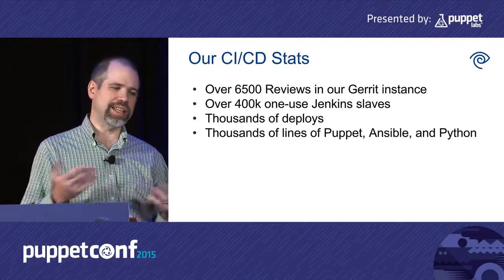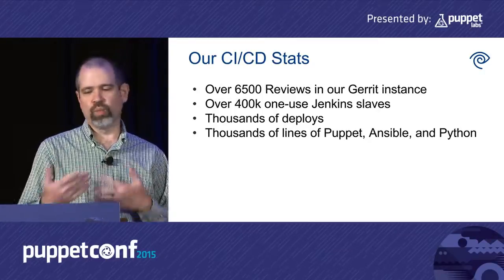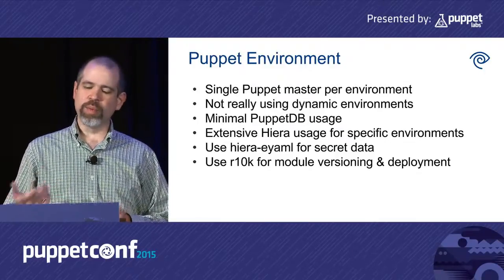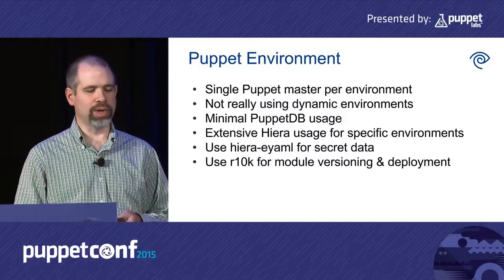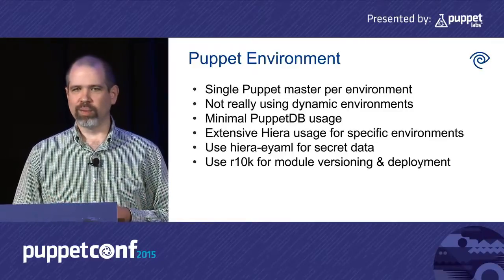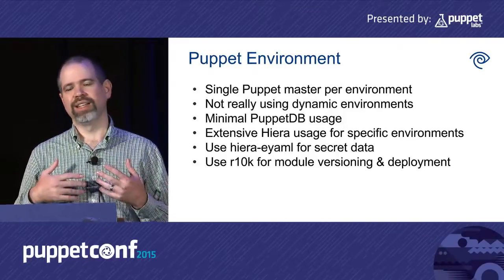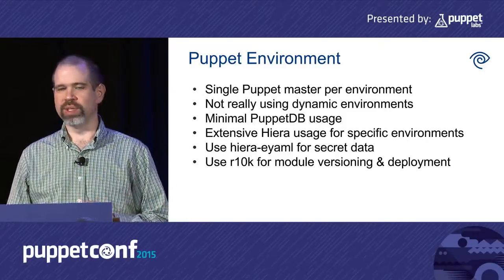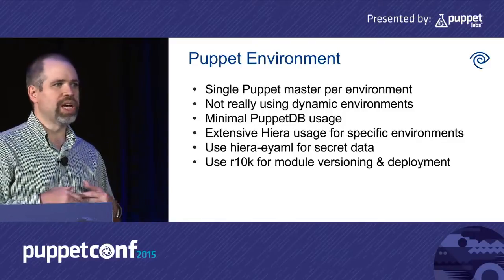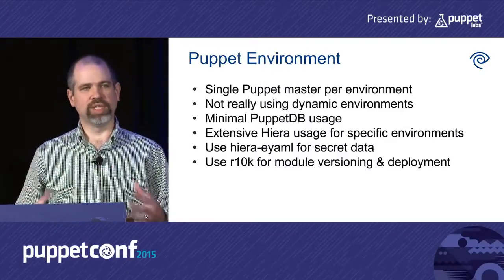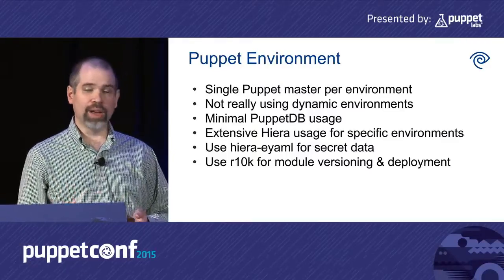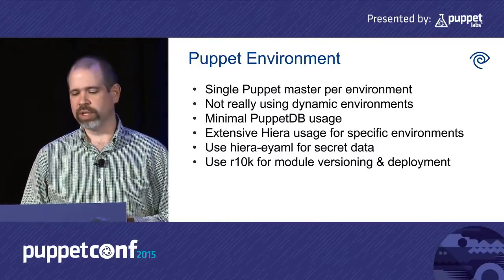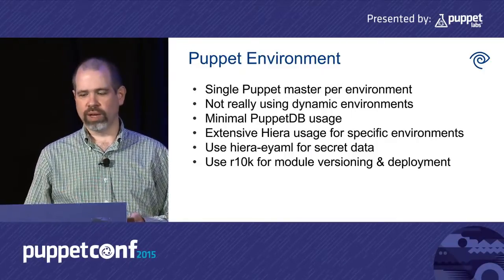This is the requisite stats slide — I'll just give you an idea of how far we've come in the last year. A little background on our Puppet environment: we're using Puppet OpenSource 3.7. We haven't upgraded to 3.8. We don't really use dynamic environments — we have one environment called production. We don't use PuppetDB very much, mostly for monitoring configuration, SSH host keys, that sort of thing. We do use Hiera extensively to manage all of our environment-specific changes and defaults, and we use the Hiera eYAML backend for secret data — passwords, SSL certs. We also use R10K for all of our module versioning and deployment.